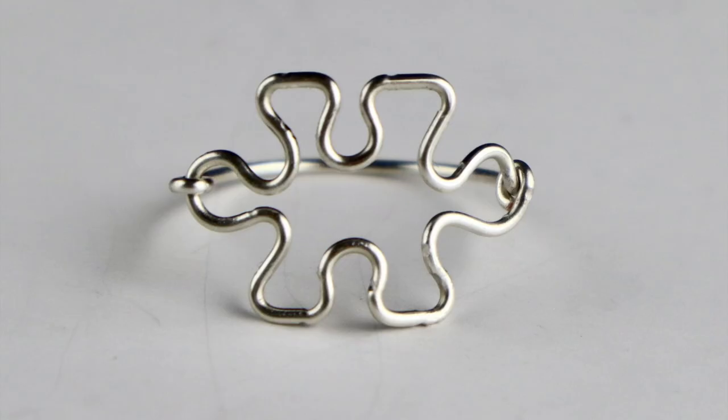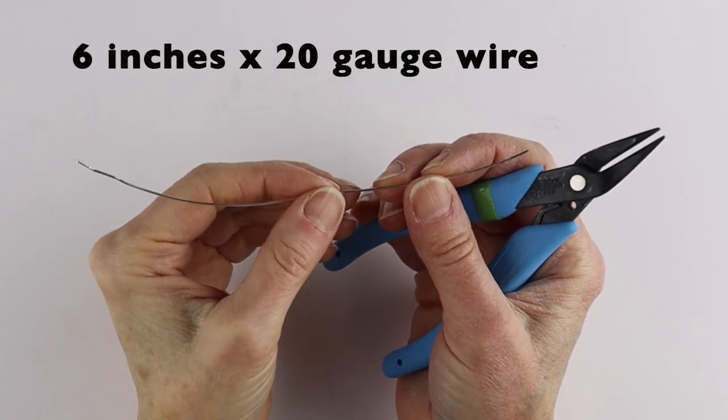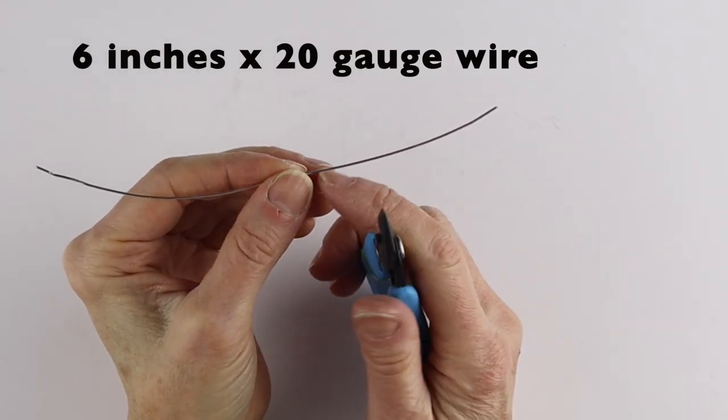Today I had a special request from Amber for a puzzle piece ring. So I'm going to start with about a 6 inch piece of 20 gauge wire.